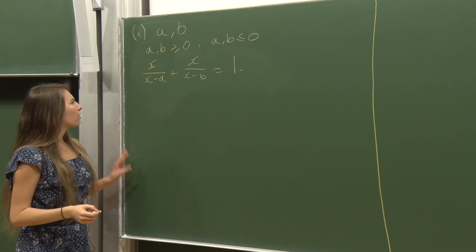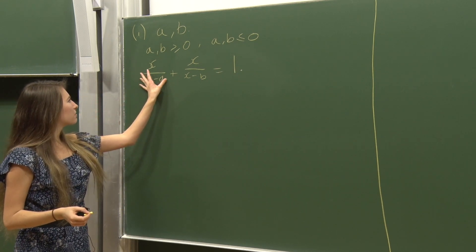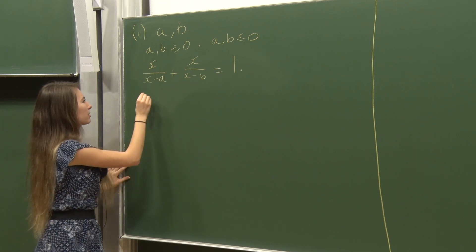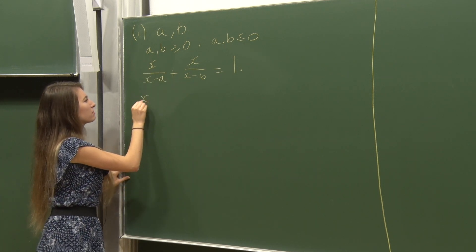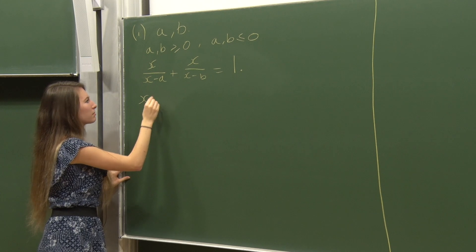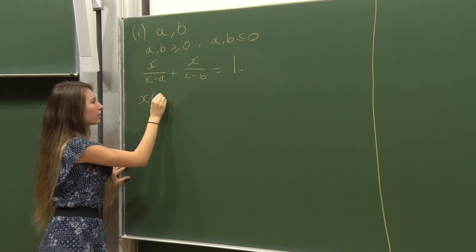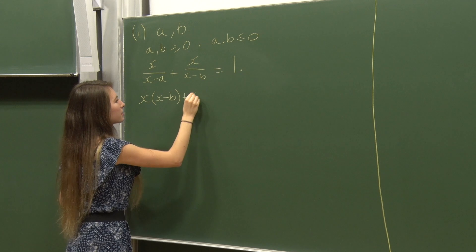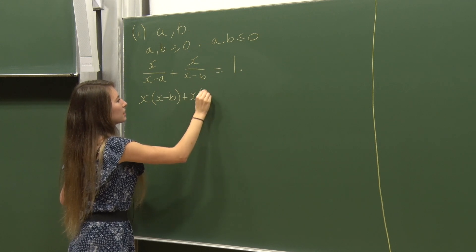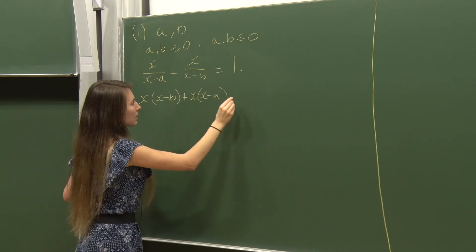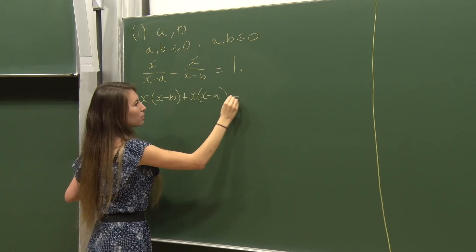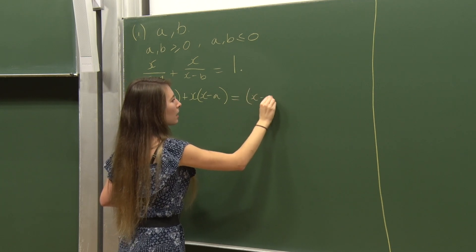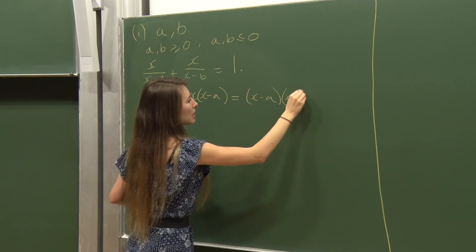I don't like having terms with x in the denominator, so I'm going to multiply up to get rid of those. Multiplying by (x-a)(x-b), that gives me x(x-b) from the first term plus x(x-a) from the second term, all equal to (x-a)(x-b).